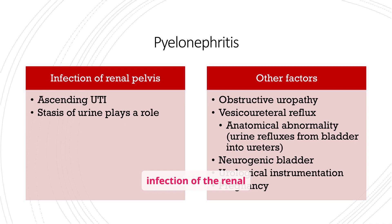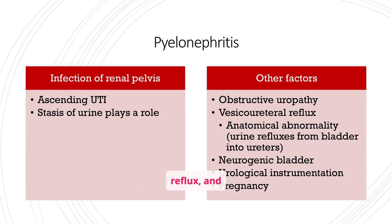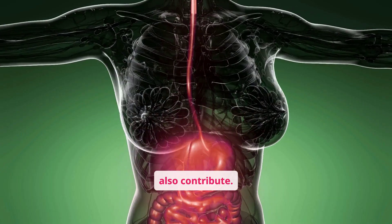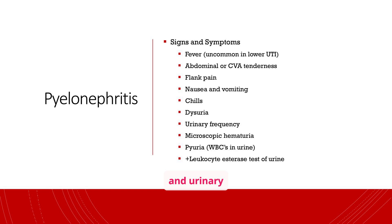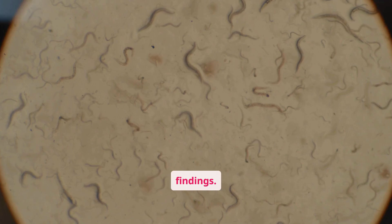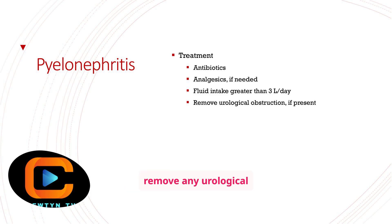Pyelonephritis is an infection of the renal pelvis. It's often caused by an ascending UTI or stasis of urine. Other factors such as obstructive uropathy, vesicoureteral reflux, and anatomical abnormalities can also contribute. The signs and symptoms include fever, abdominal or CVA tenderness, flank pain, nausea and vomiting, chills, dysuria, and urinary frequency. Microscopic hematuria and pyuria are also common findings. Treatment typically involves antibiotics, analgesics, and high fluid intake. It's also important to remove any urological obstruction if present.